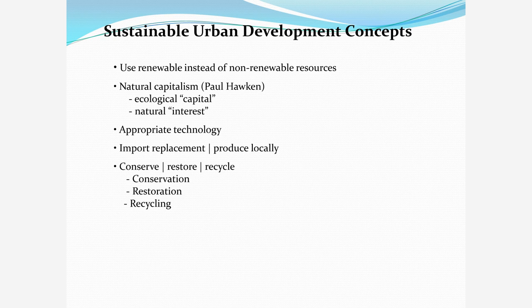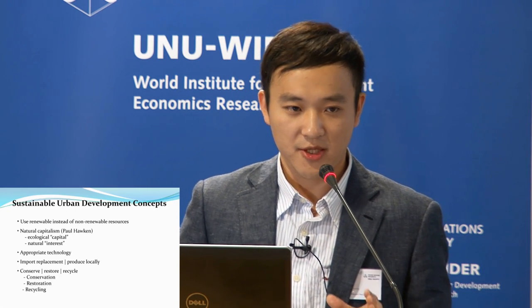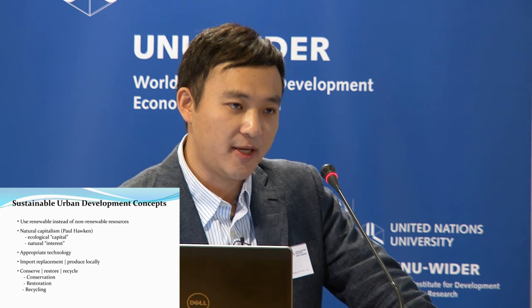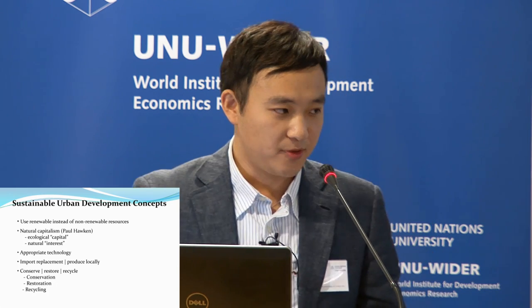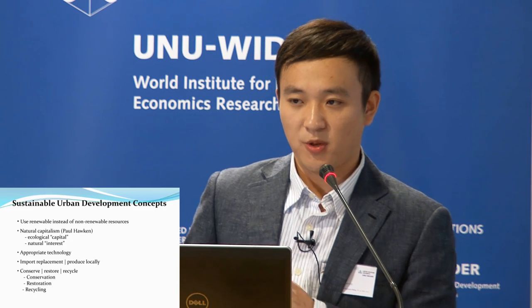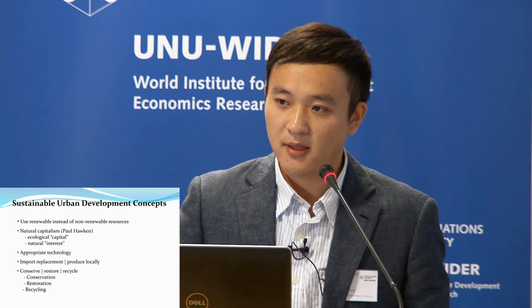In the movement of sustainable urban development, we have five methods. First, we can use renewable resources instead of non-renewable ones, knowing that natural capital is very fundamental for our cities. We should apply appropriate technology in research and practice, such as biofuel instead of fossil fuels. We should also promote import replacement and produce locally to not over-exploit local resources, and we need to conserve, restore, and recycle local resources.